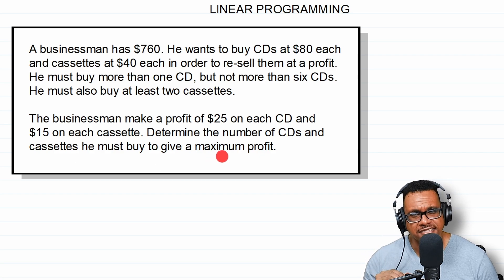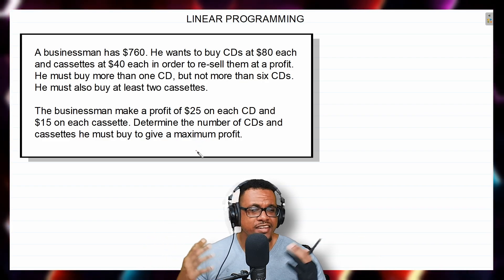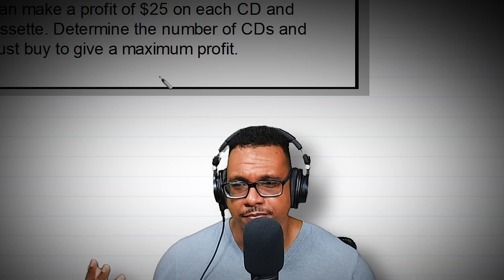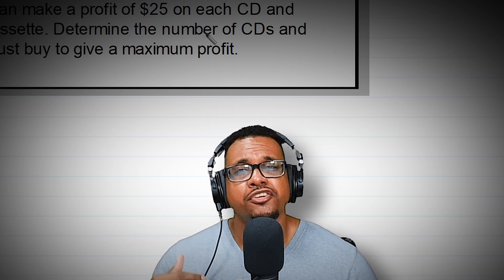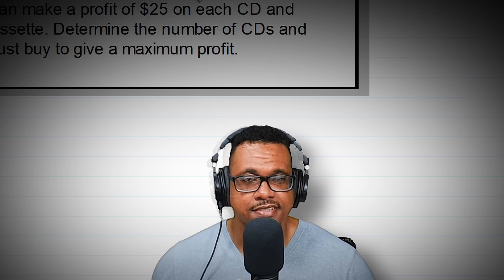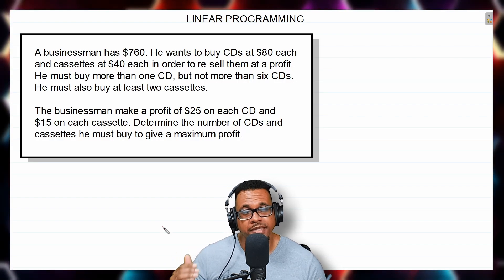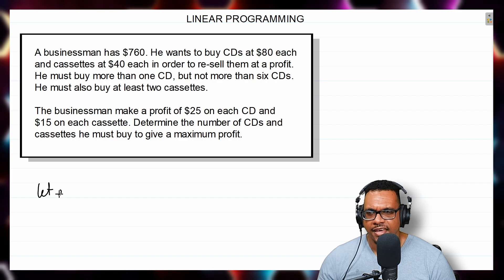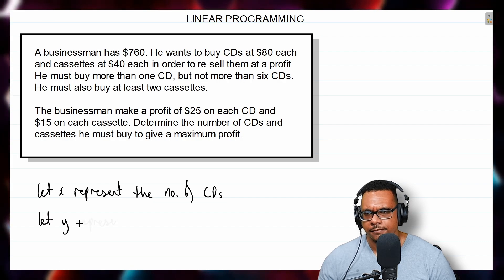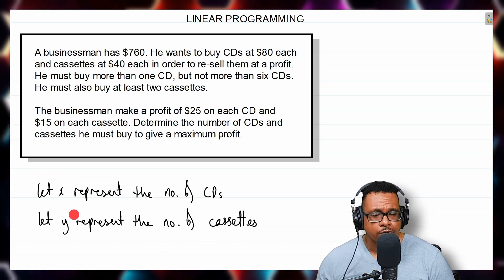That's what we want to find — what gives us a maximum profit. Since we're going to represent these inequalities on the Cartesian plane, which has an x-axis and a y-axis, our variables will be x and y. We let x be the number of CDs and let y be the number of cassettes. So now that we know what our variables are, we can form our inequalities.